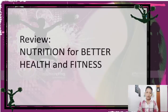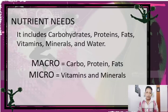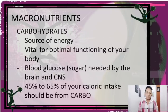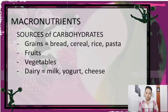Now for a review of nutrition for better health and fitness. Our nutrient needs include carbohydrates, proteins, fats, vitamins, minerals, and water — macronutrients being carbohydrates, proteins, and fats, and micronutrients being vitamins and minerals. Carbohydrates are a source of energy, vital for optimal body functioning; blood glucose is needed by the brain and CNS, and 45% to 65% of your calorie intake should come from carbohydrates. Sources include grains (bread, cereal, rice, pasta), fruits, vegetables, and dairy products like milk, yogurt, and cheese.